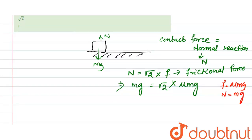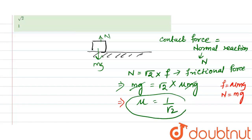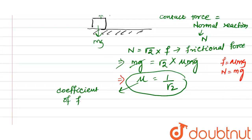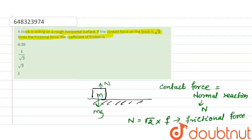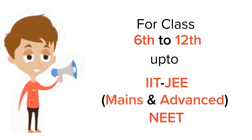From this equation, mg cancels from both sides. So we get mu is equal to 1 divided by root 2. The coefficient of friction mu equals 1 by root 2. So option number 2 is correct — the coefficient of friction is 1 by root 2.